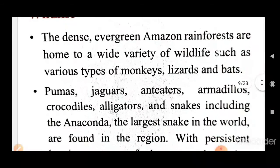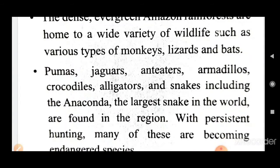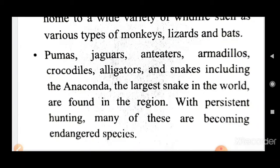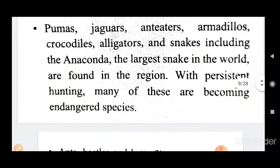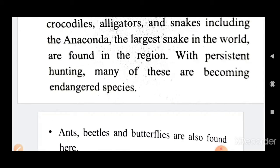Now come to the wildlife. The dense evergreen Amazon rainforest is home to a wide variety of wildlife. Various types of monkeys, lizards, and bats are found here. Pumas, jaguars, anteaters, armadillos, crocodiles, alligators, and snakes including the anaconda — the largest snake in the world — are found in this region. With persistent hunting, many of these are becoming endangered species.